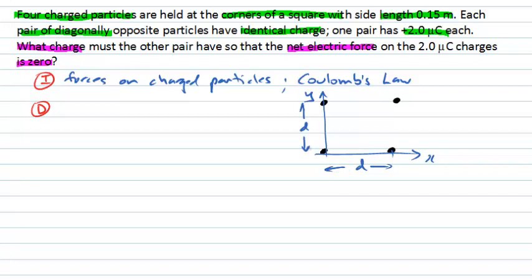And we're told that these charges come in pairs. So why don't we label those. Let's call this one here q1, and we'll call this q1 as well. Let's call this q2, and we'll call this q2 as well, because we know that the diagonal pairs have identical charges. Our value for d will end up being 0.15 metres. We're told that one of these pairs of charges has a particular value. So let's choose that to be q1. We know that's going to be plus 2 microcoulombs. And we don't know what q2 is. That's what we're trying to find out.